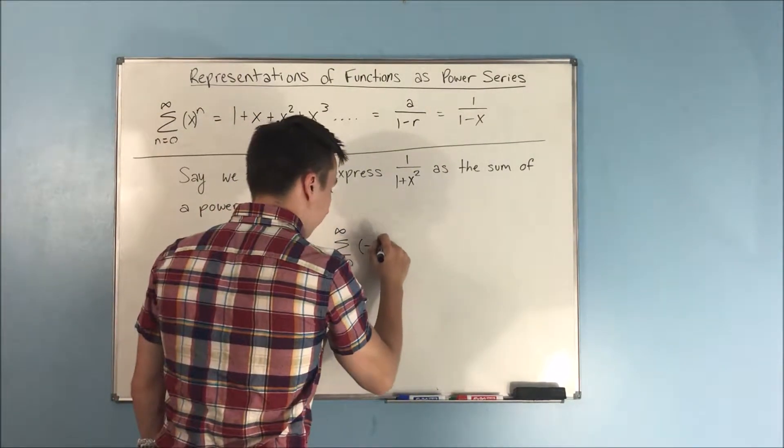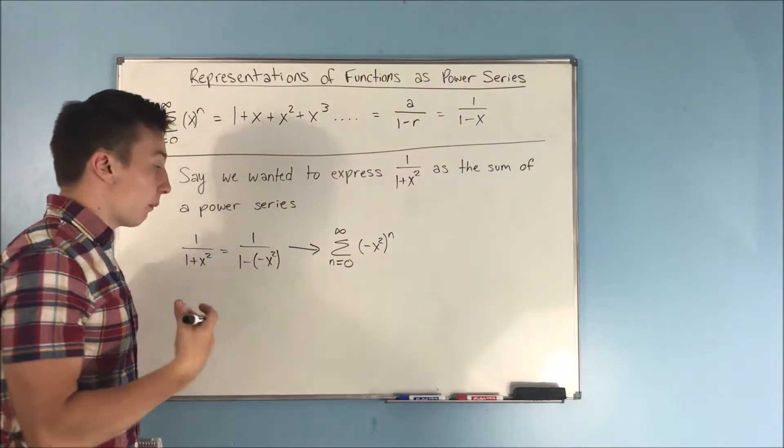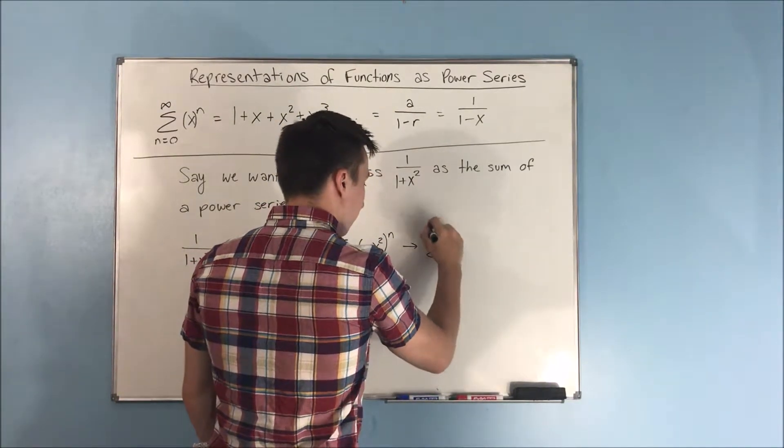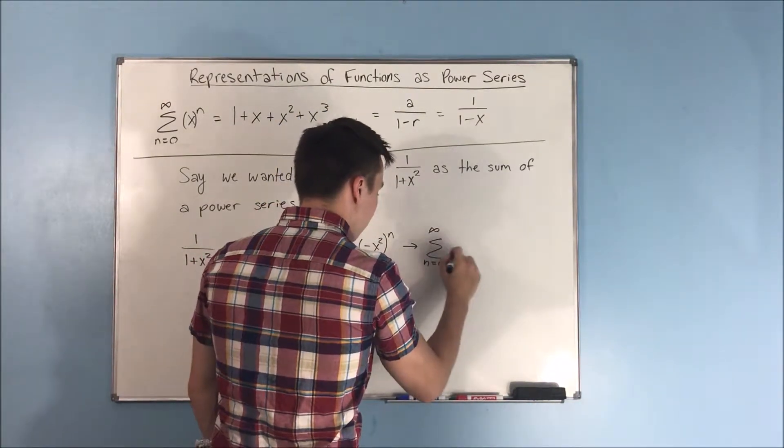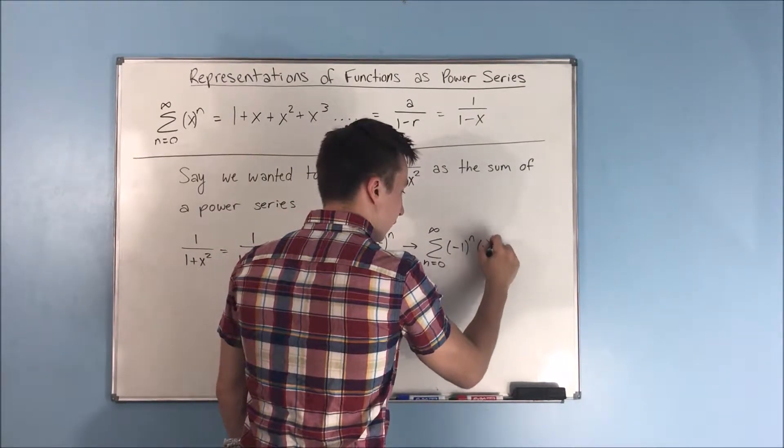Now you can break this up if you'd like. You can say that this is the sum from n equals 0 to infinity of negative 1 to the n times x to the 2n.